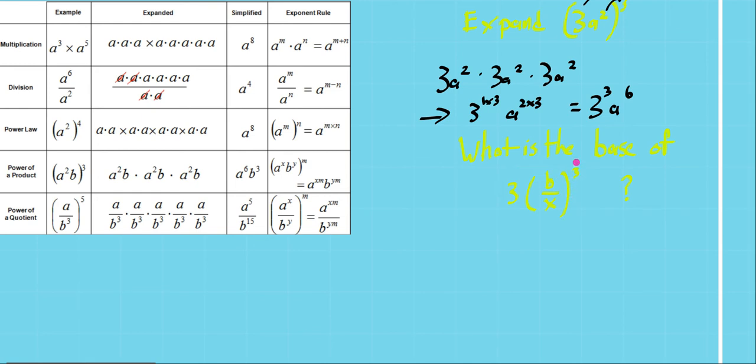The base is what gets the exponent applied to it, which is the b and the x. So in this case, the base is b over x. That's our base.